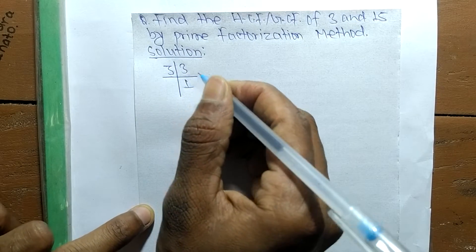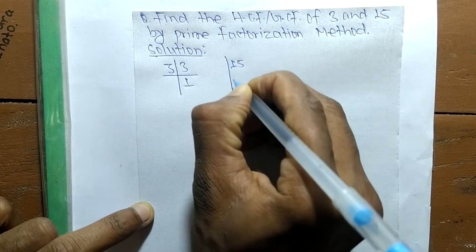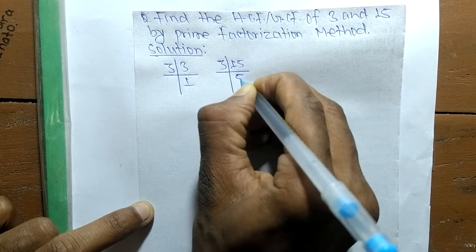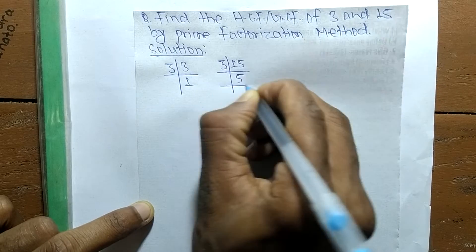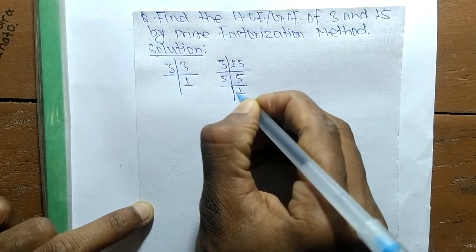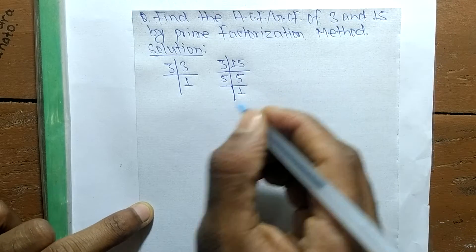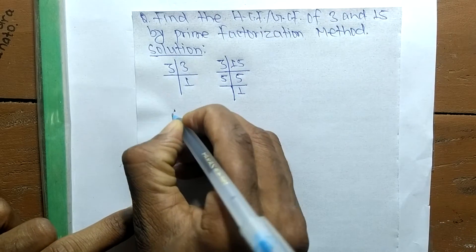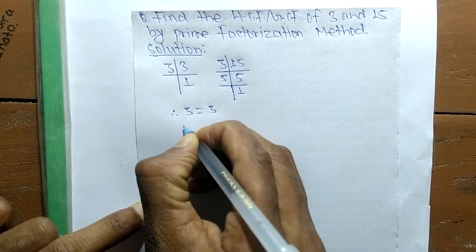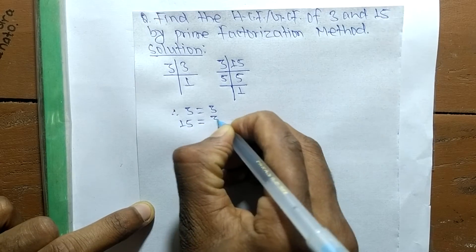The prime factors of 15 are 3 times 5, which equals 15, and 5 times 1, which equals 5. So from these prime factors, we can write: 3 equals 3, and 15 equals 3 times 5.